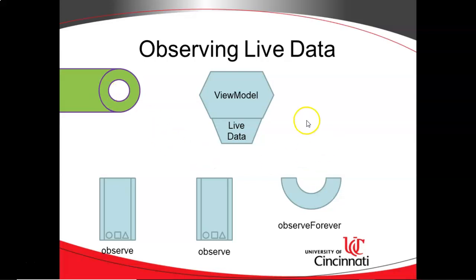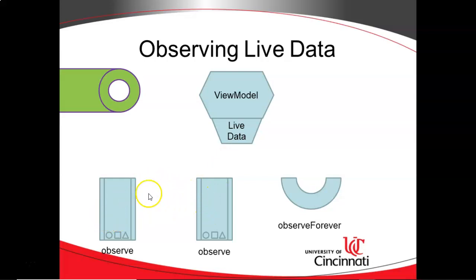We have a view model using the model-view-view-model design pattern, and this view model has an attribute of live data or mutable live data or something like that. We have down here a couple of devices, or a couple of apps that would be on devices.